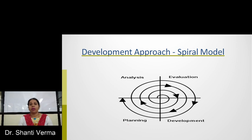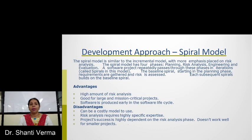Now let's discuss the spiral model for development approach. In the spiral model, first is the analysis, evaluation, development and planning, and this proceeds in a circular manner. The advantages of spiral models are high amount of risk analysis and it is good for large and mission-critical projects. Disadvantages are it can be a costly model to use, risk analysis requires high specific expertise, and it doesn't work well for smaller projects. The spiral model is an incremental model with more emphasis placed on risk analysis. Starting with the planning phase, requirements are gathered and risks are assessed, and each subsequent spiral builds on the baseline spiral.